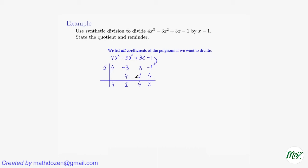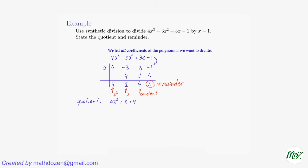So how do we read this result in the third line? The very last entry is the remainder — that's easy. The quotient is the remaining numbers. The last entry is the constant, the next one is the x-coefficient, the next one is the x-squared coefficient, and you just keep going until you exhaust all the numbers. Here we end at x-squared. So the quotient is 4x squared plus x plus 4, and the remainder is 3 — just what we got using long division, but much faster.